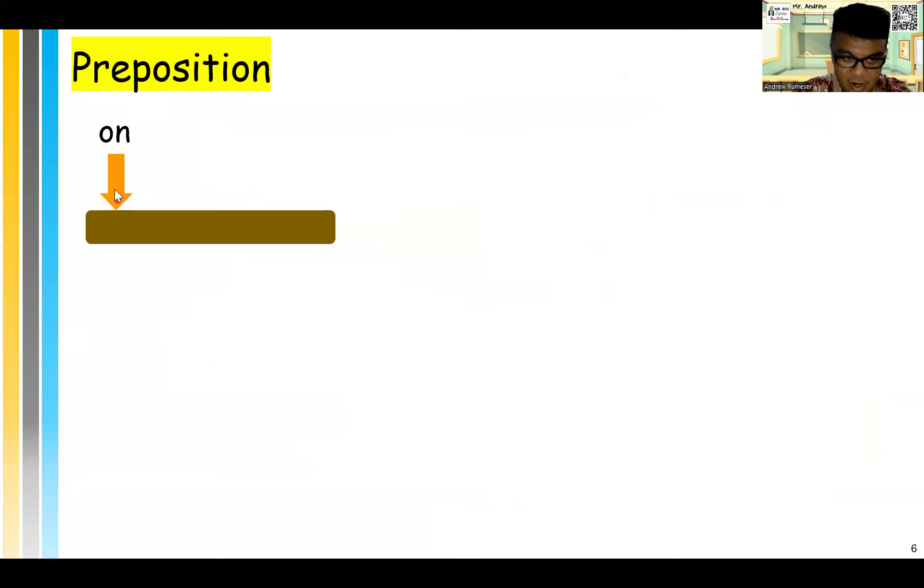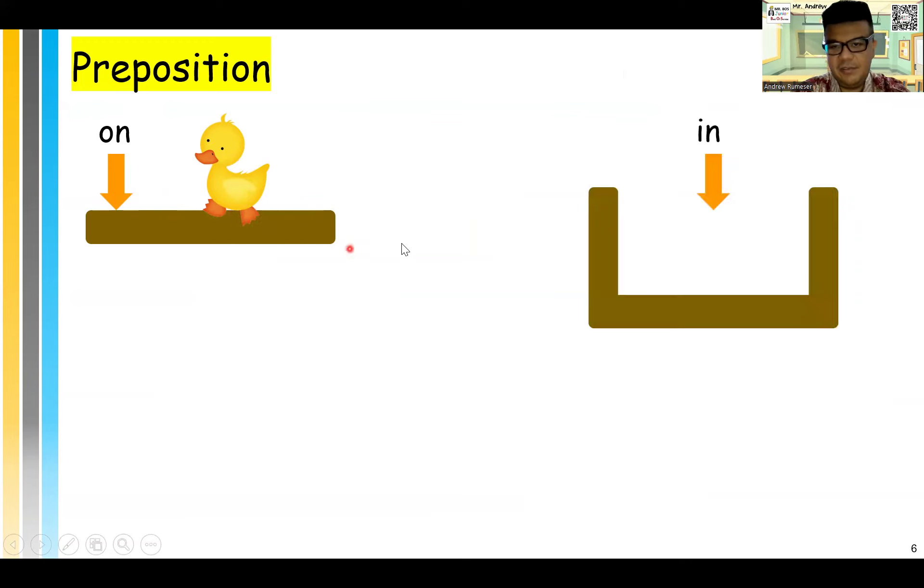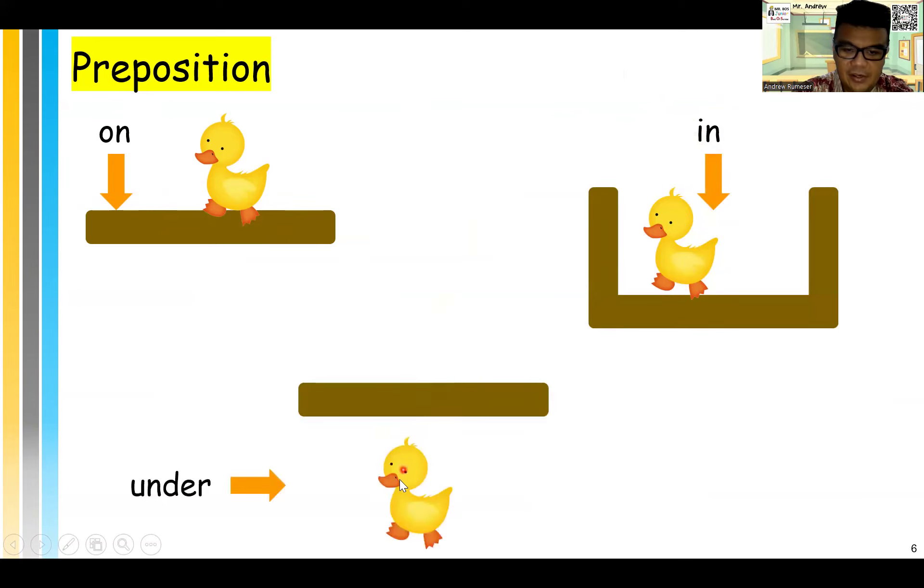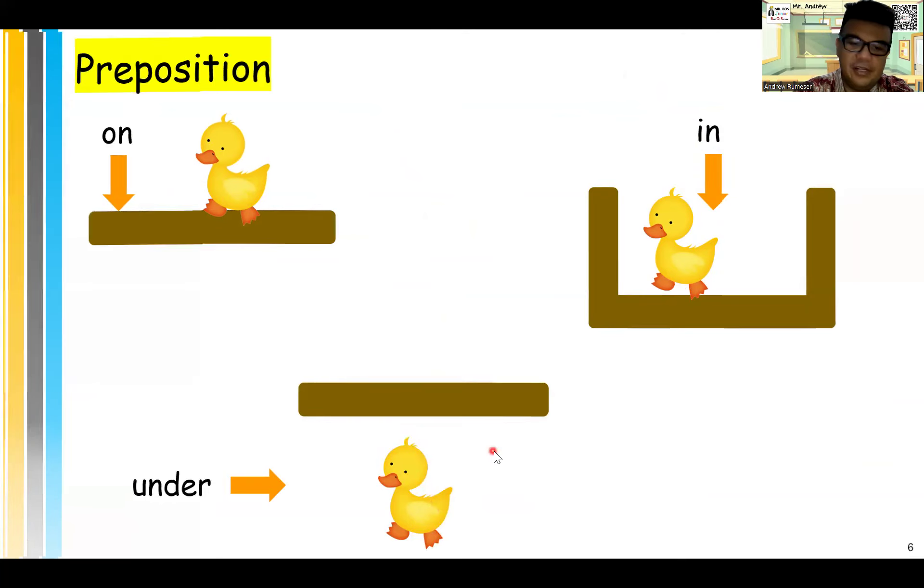So, on. On is like this, right? On. The duck is on the tree or on the floor, for example. In. It's like this. You go inside like this. The duck is in the box, right? And under is like this. For example, the duck is under. Down here, the table, for example, right?